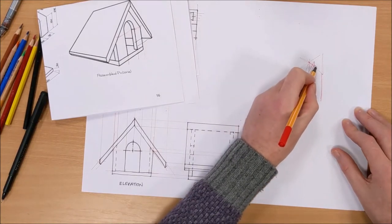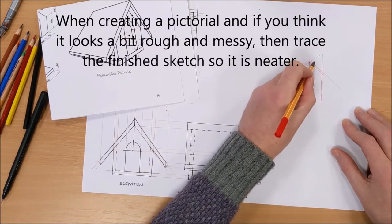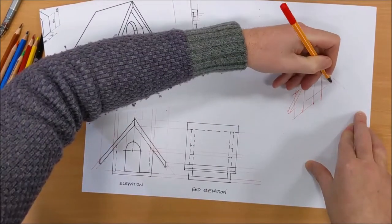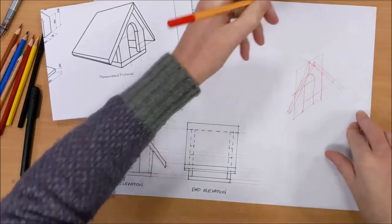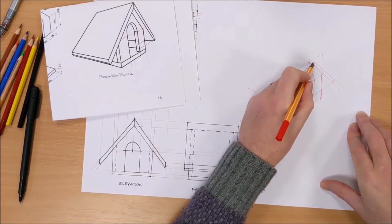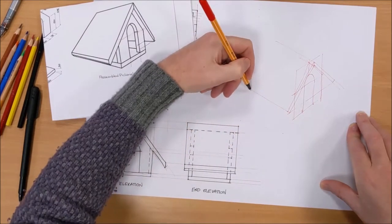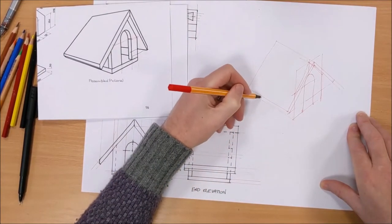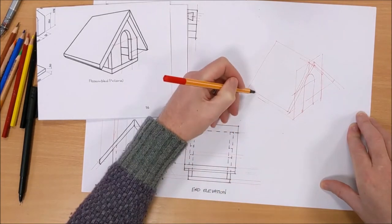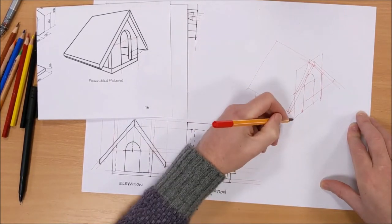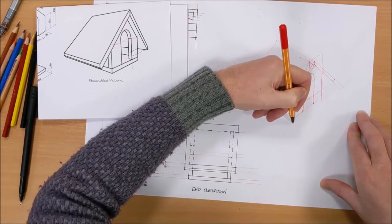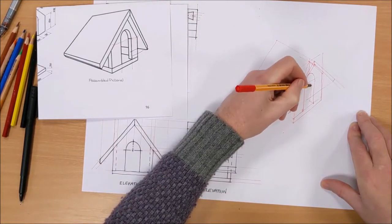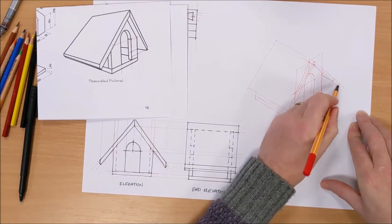Around about there. Take this across, get the roof going across that way. A wee bit underneath, inside a curve, it's coming that way.